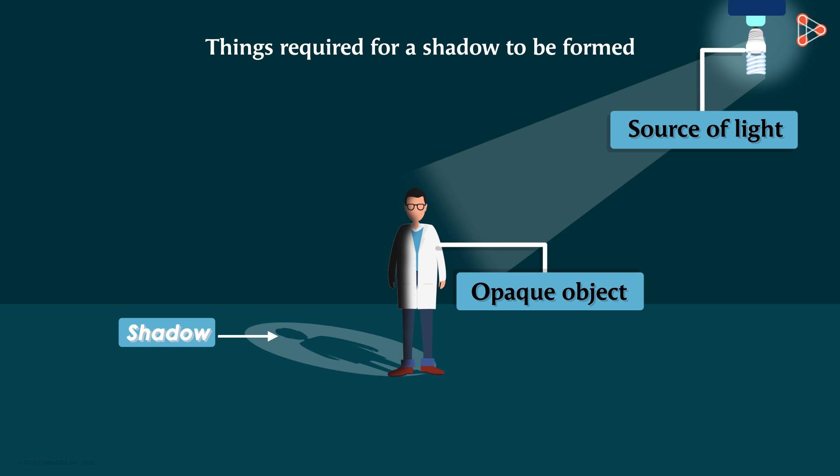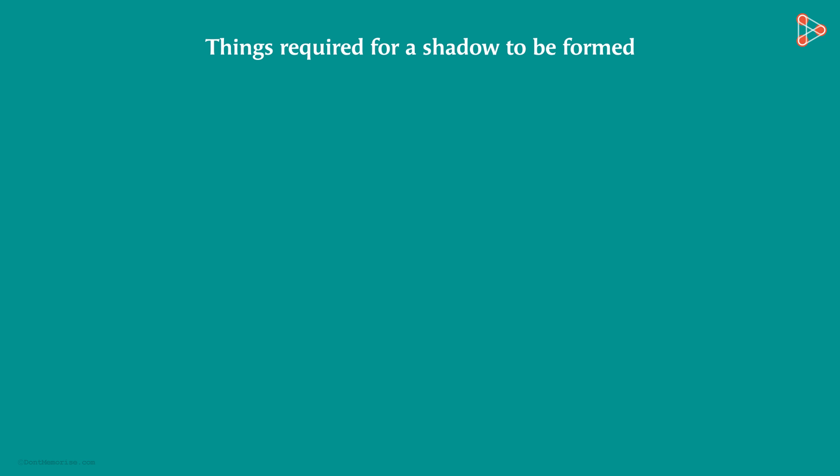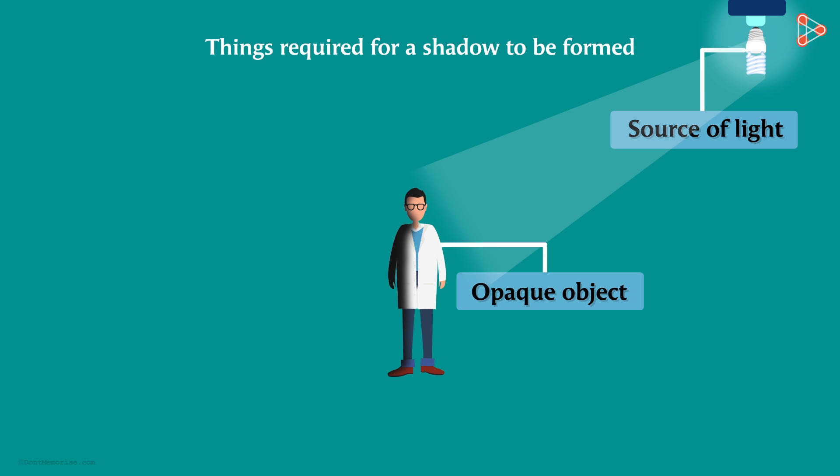Can you identify any other thing we may need for a shadow? Maybe not. Now let's consider a different situation. In this situation too, we have a source of light as well as an opaque body. But, do we see a shadow?